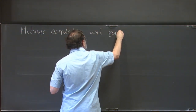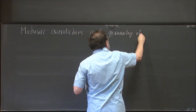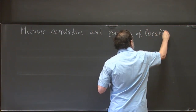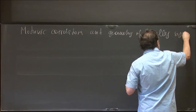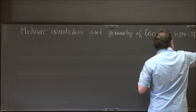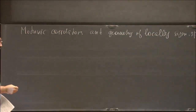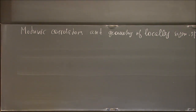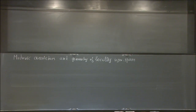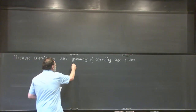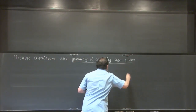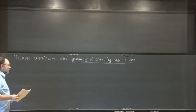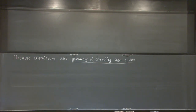The topic is motivic correlators and geometry of locally symmetric spaces. The plan is: first, some background which I need in order to talk about motivic correlators — that will take a little time. Then most of the lecture will be about this subject and how it relates to the action of the Galois group on the fundamental group of some of the simplest possible curves.